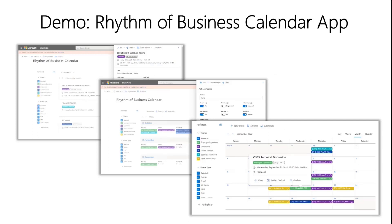Now let me demo a sample app that we built using this accelerator. Some quick context: the app that we built is the Rhythm of Business Calendar, and it helps you keep track of your business goals by managing team events. You can coordinate and plan with your team easily using color-coded events, approval workflow, refiners, and confidential events. The app is perfect for people who manage a team calendar, like Chiefs of Staff or Executive Assistants, and it can be used in SharePoint or in Teams.